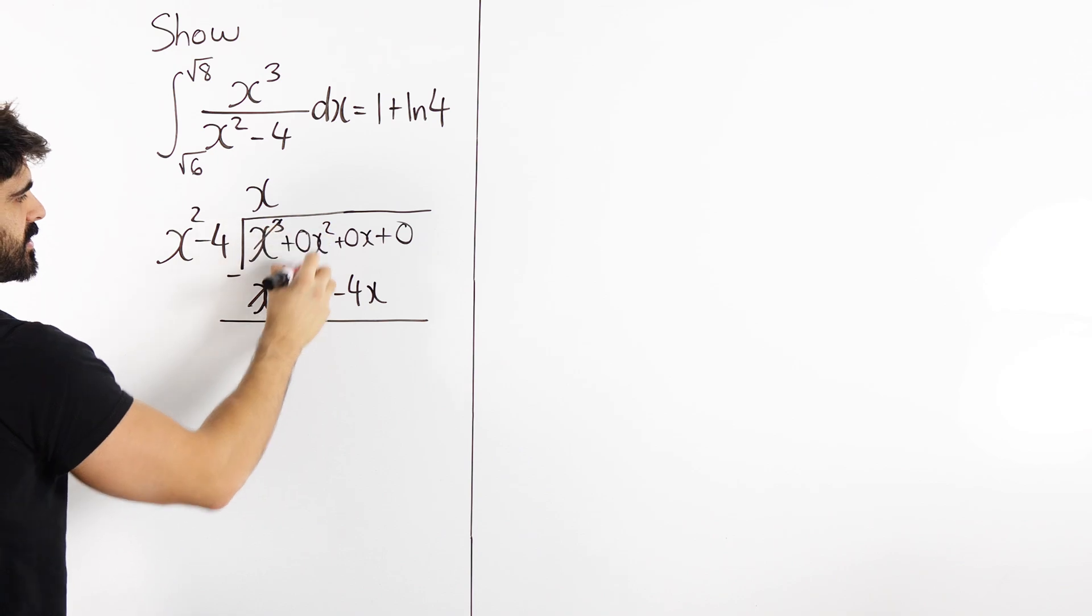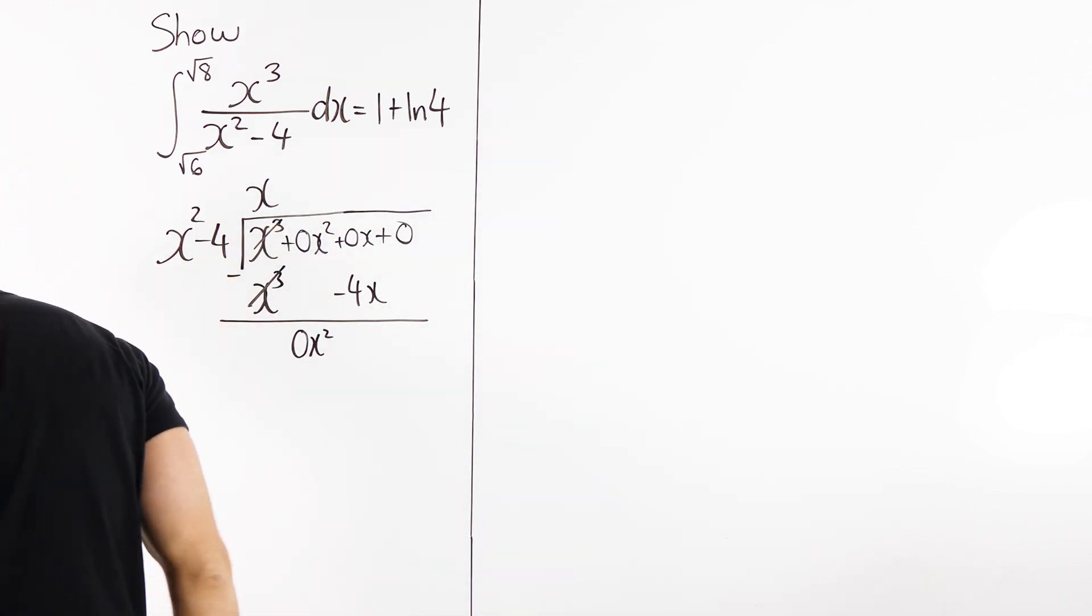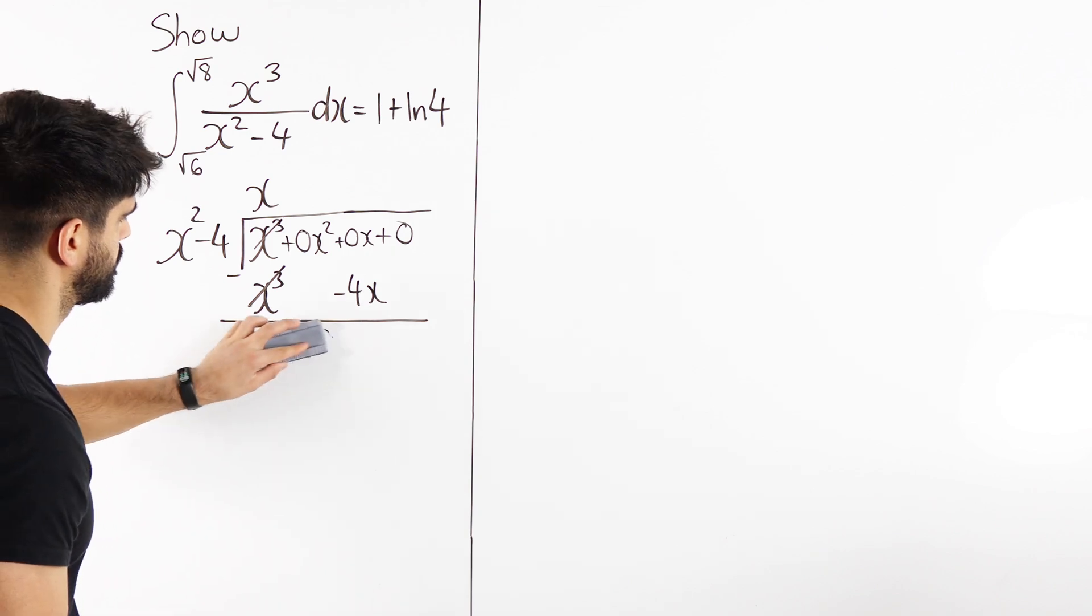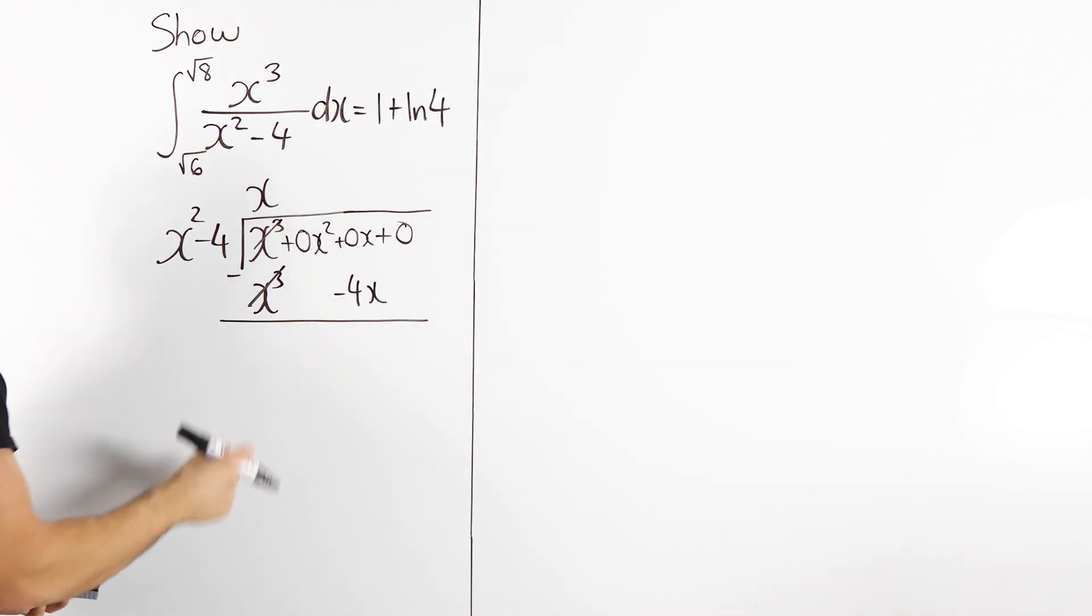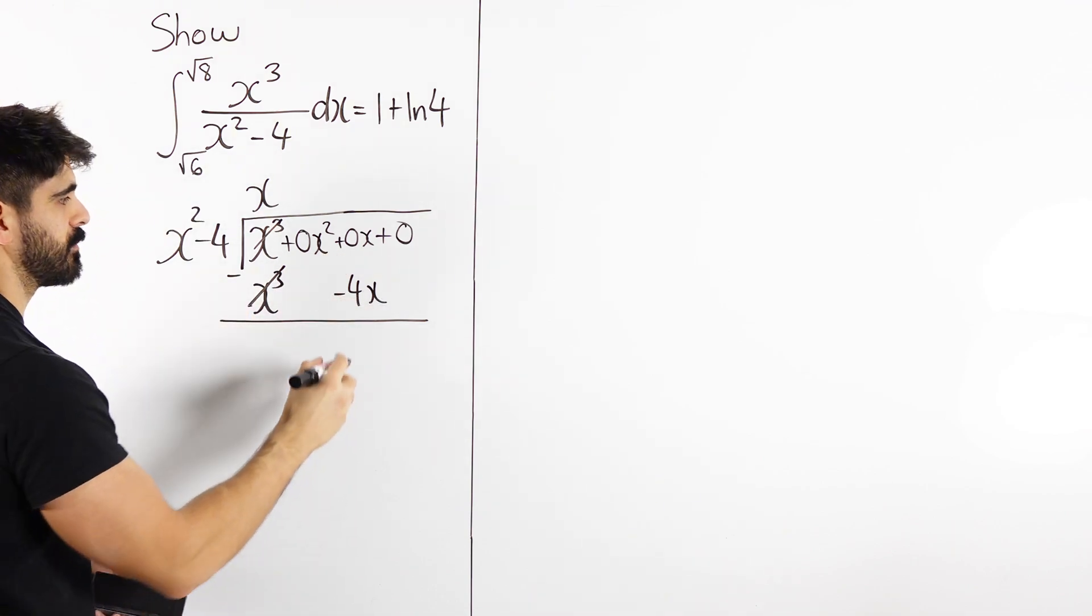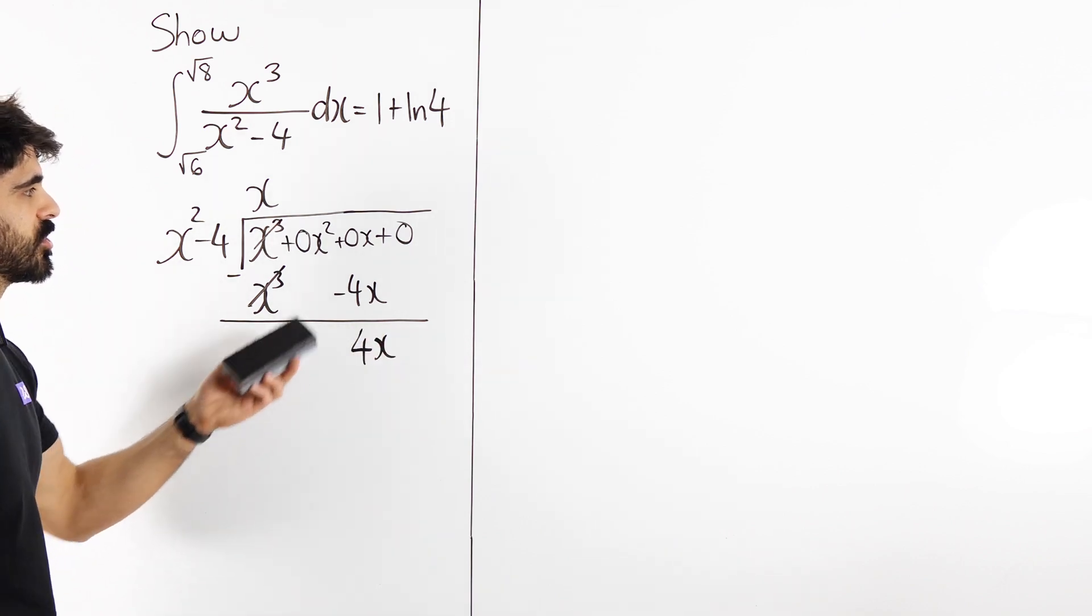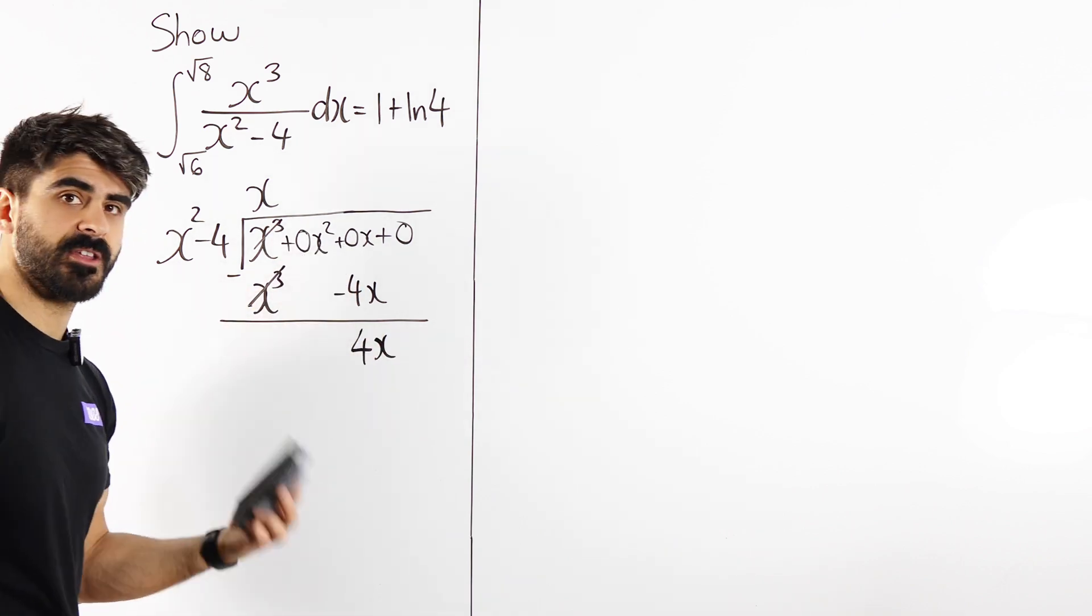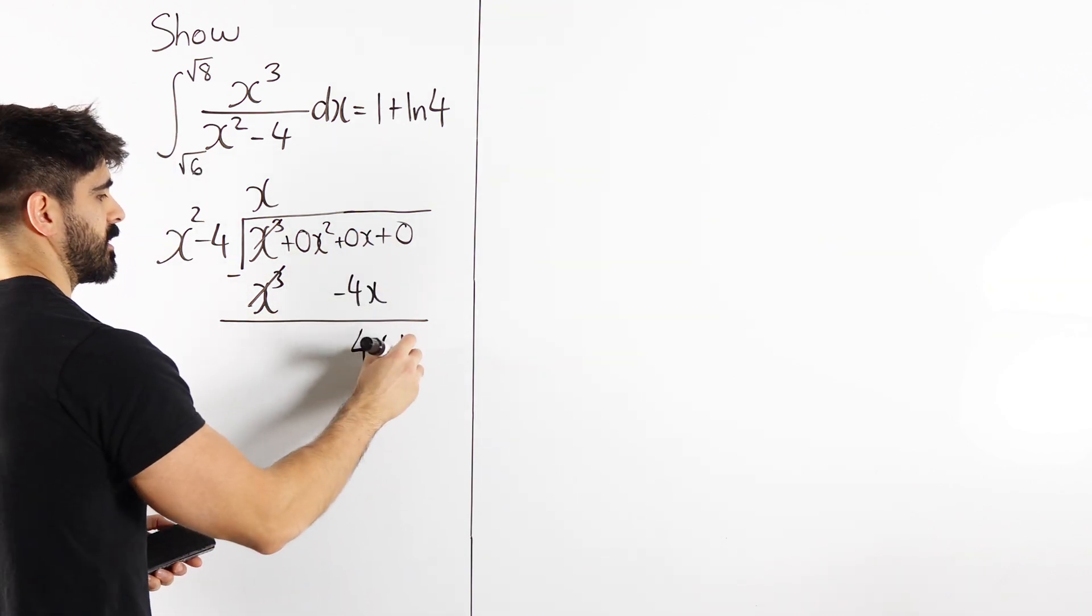So these cancel. 0x squared, which we don't need to worry about. We have 0 minus minus 4x, which becomes positive 4x. So what students do is they forget this 0x and they carry down the minus 4. Guys, don't be that person. Then the 0 can come down.